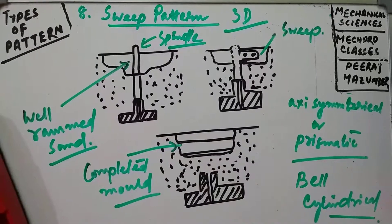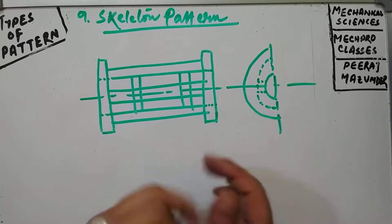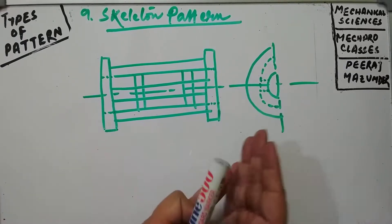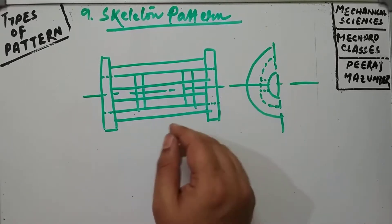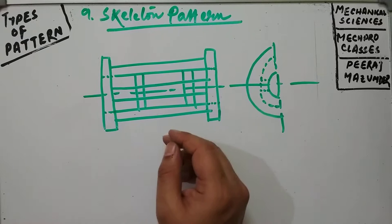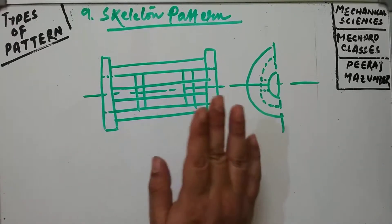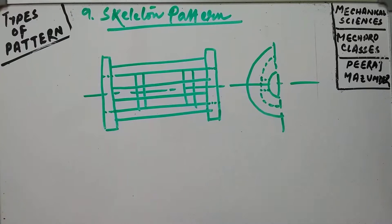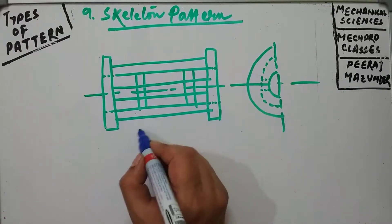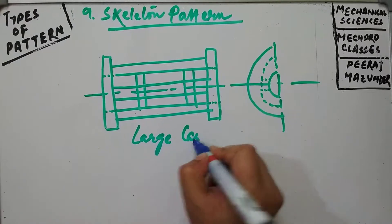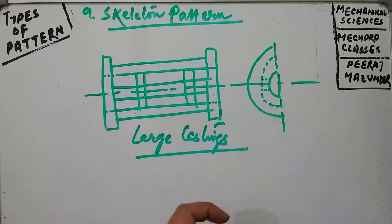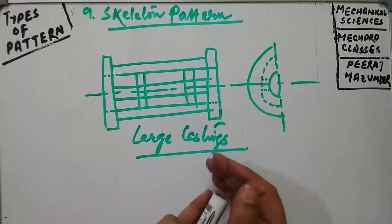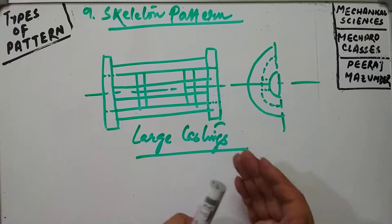The last type is the skeleton pattern. It is a skeleton of the pattern made of strips of wood, and the final pattern is built by packing sand around it. After packing, the desired form is obtained using a strickle. The geometry of the skeleton depends on the geometry of the workpiece. This type of pattern is used for large castings required in small quantities where the expense of a full complex wooden pattern is not justified.